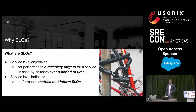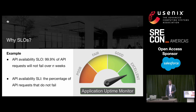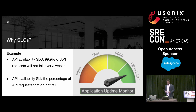So why did we care about implementing SLOs for our service? Let's first define what SLOs are. SLOs are service-level objectives that set performance and reliability targets for a service as seen by its users over a period of time. This means when a well-chosen SLO target is not met by a service, users typically become frustrated with the service. The performance metrics collected to inform these reliability targets are service-level indicators. For example, a web API availability SLO can be that 99.9% of all API requests will not fail over a period of N weeks. In this case, the corresponding availability SLI or metric for this SLO would be the percentage of all API requests that do not fail.